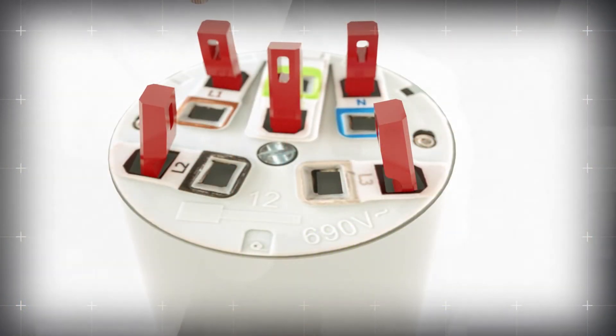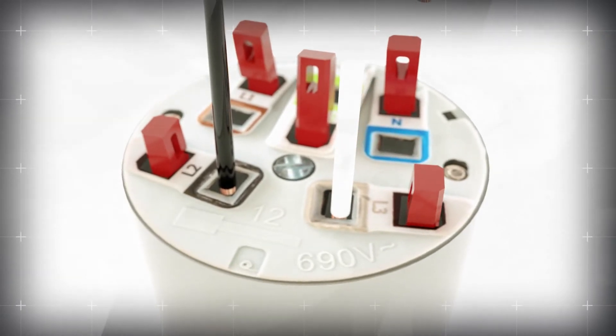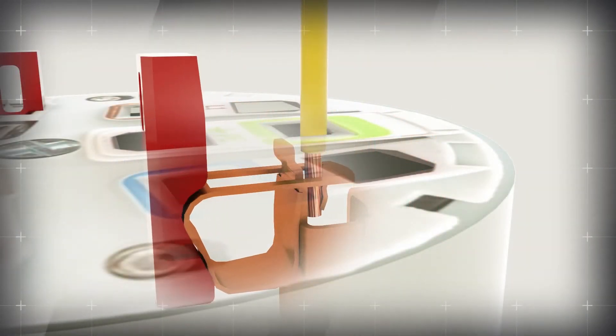With red activation plungers shipped in the up position, installers simply insert each wire into the adjacent compartment and press the red plunger back down for a secure termination with no tools.